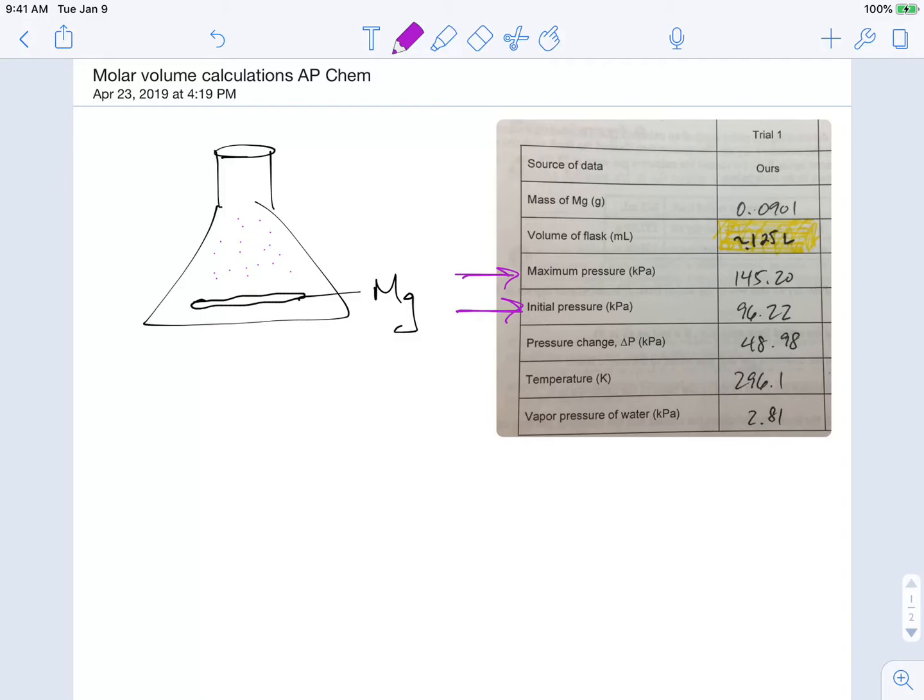So first thing we did is that we're going to take our mass of magnesium and we're going to convert that to moles. So one mole of magnesium has a mass of about 24.305 grams. And then that's going to tell us that, doing our little math here, that's going to tell us that our mass of magnesium represented about 0.00371 moles of magnesium.